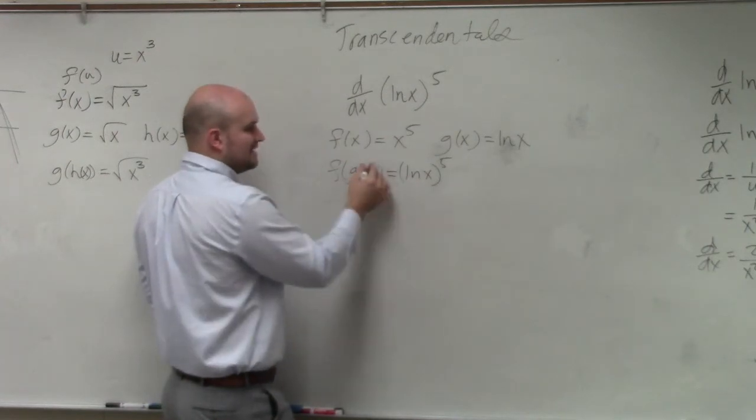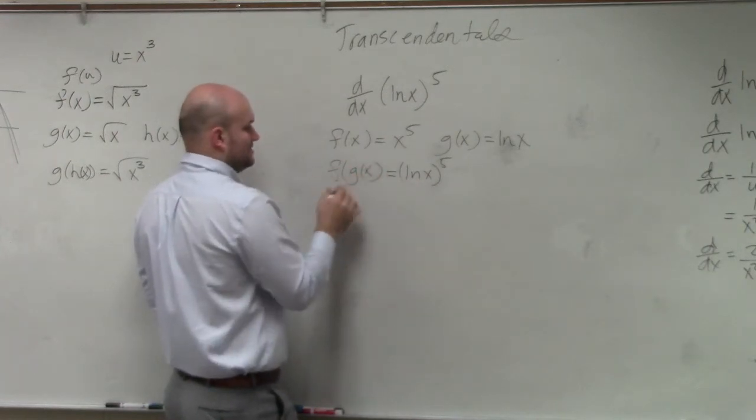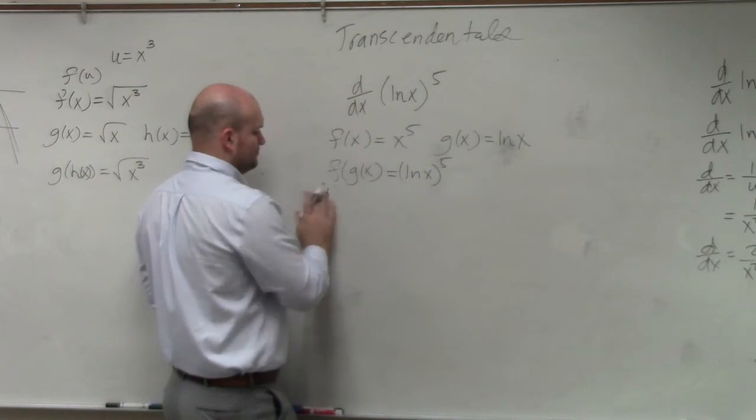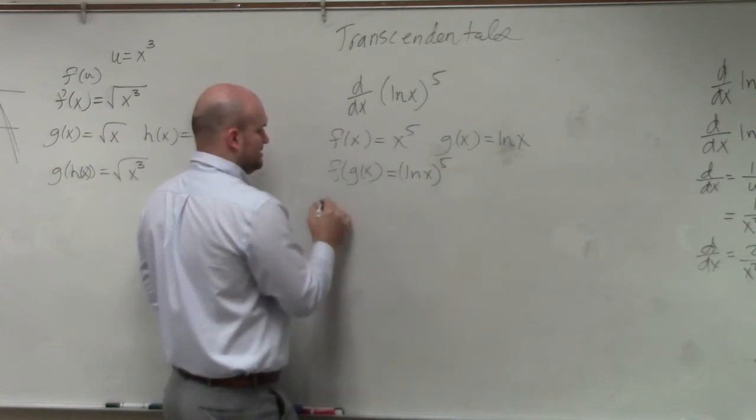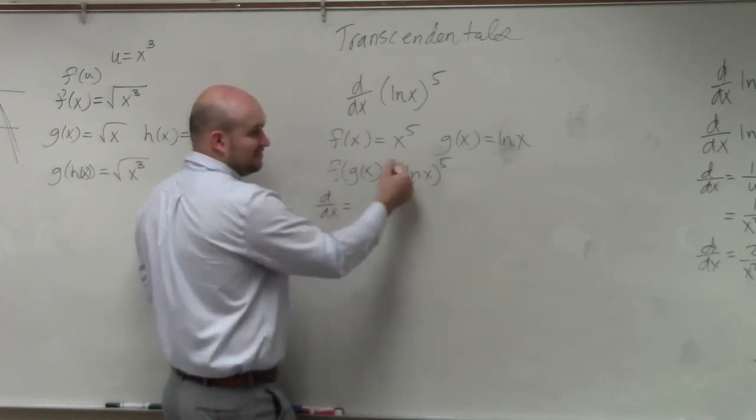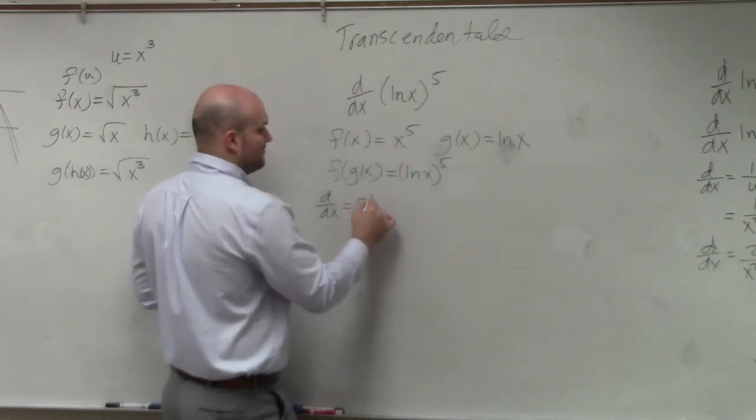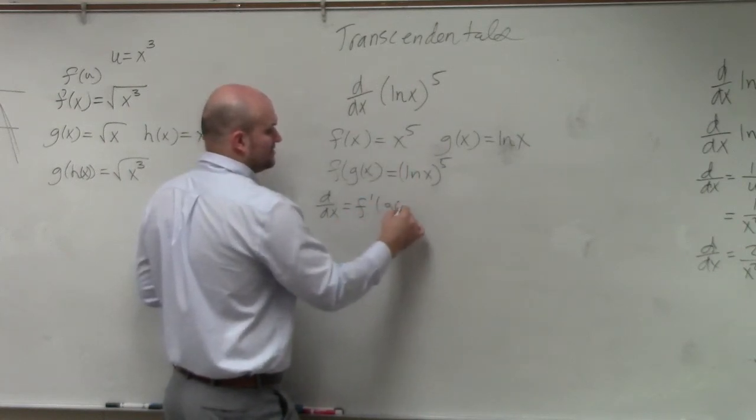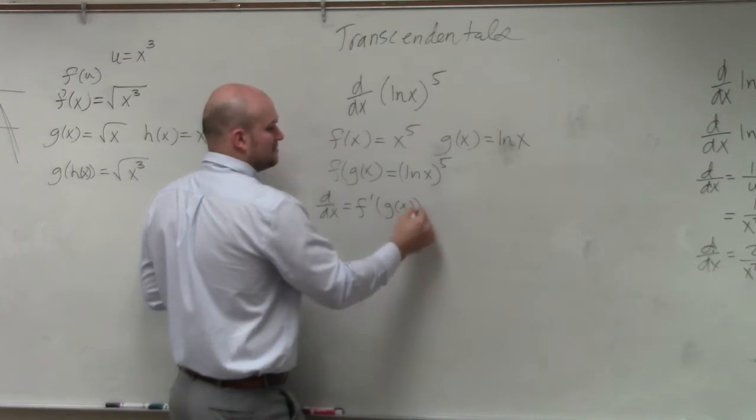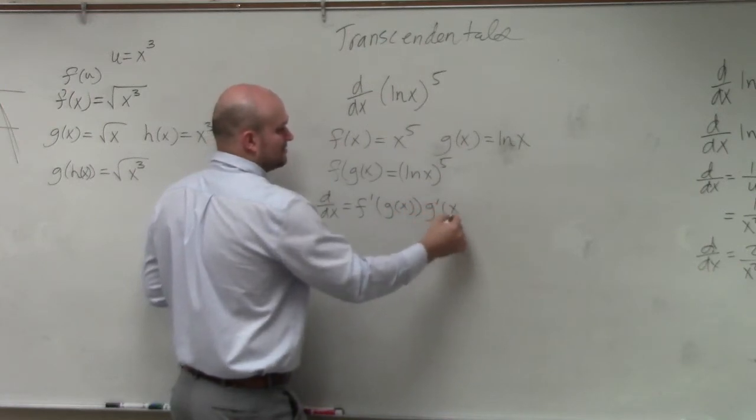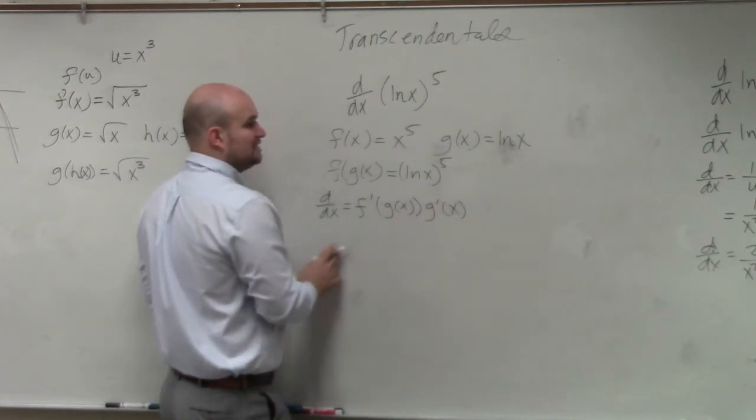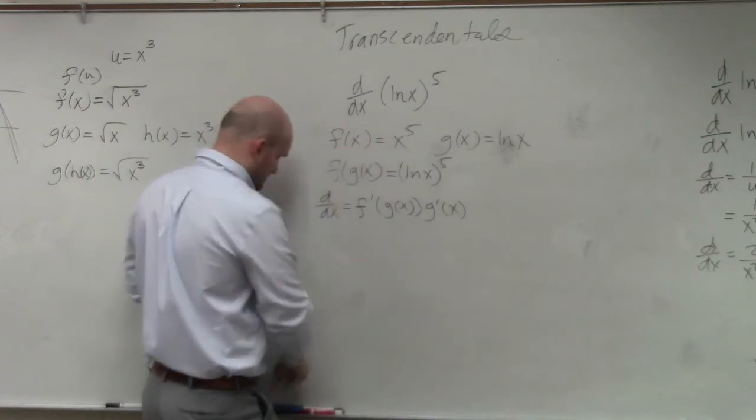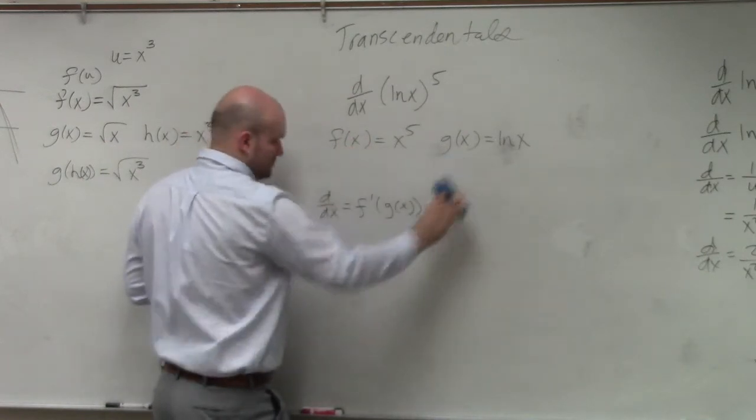So if you remember taking the derivative of this, what we did was to take the derivative using the chain rule. What we had is f'(g(x)) times g'(x). So what you need to do is find the derivative f' and you need to find the derivative g'.